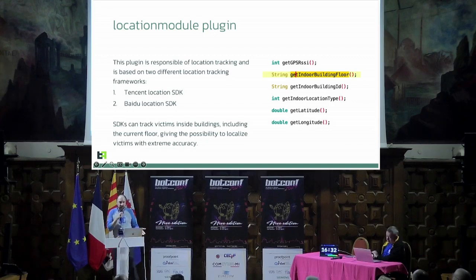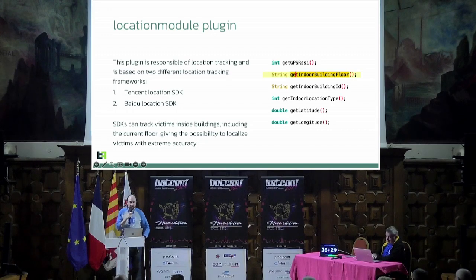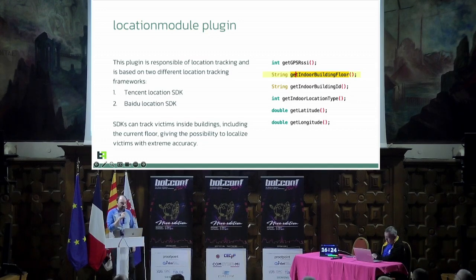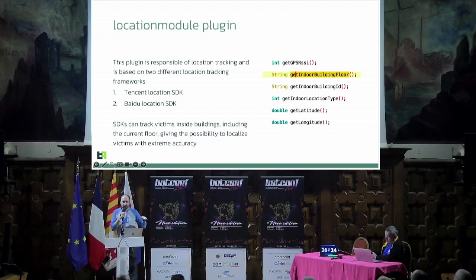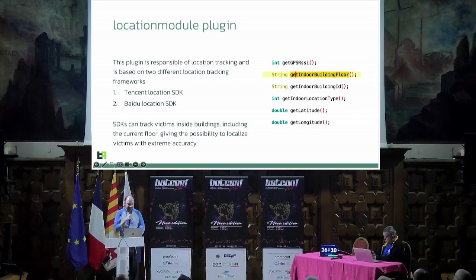The location plugin uses native Android API and is easy to implement. But these guys also use custom frameworks from Baidu and Tencent. They can determine not just the city or street address of the victim — they can determine the floor where the victim resides, which is quite interesting and scary.